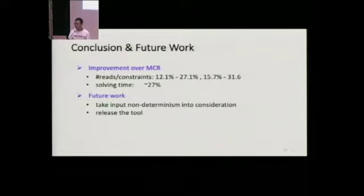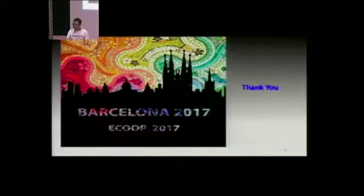In conclusion, the goal of our work is to make MCR more efficient. On average, we reduce the number of reads and constraints by 12 to 27 percent and 15 to 31 percent respectively, and the solving time by 27 percent on average. For future work, we plan to consider input non-determinism to enable full verification. We are also preparing to release the source code of our tool, hoping to push software model checking a little forward and be helpful to other researchers.